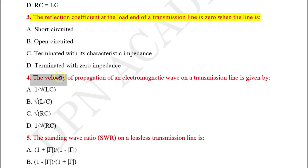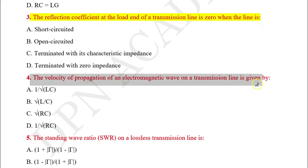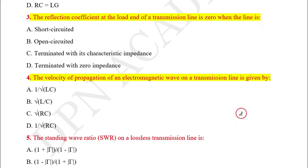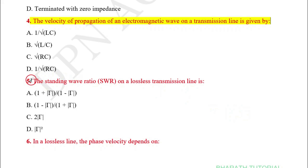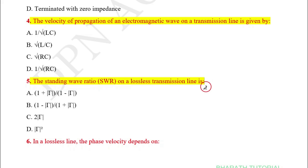Question number four: The velocity of propagation of an electromagnetic wave on a transmission line is given by? Question number five: The standing wave ratio on a lossless transmission line is?